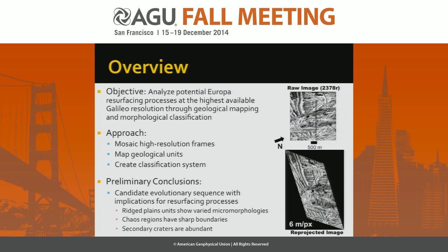Our objective was to analyze potential Europa resurfacing processes at the highest available Galileo resolution through geological mapping and morphological classification. We wanted to do this through mosaicing the highest resolution frames, mapping the geological units in this area and in the regional context, and then creating a classification system based upon these units. Some preliminary conclusions include a candidate evolutionary sequence with implications for resurfacing processes, based on three observations in this area.